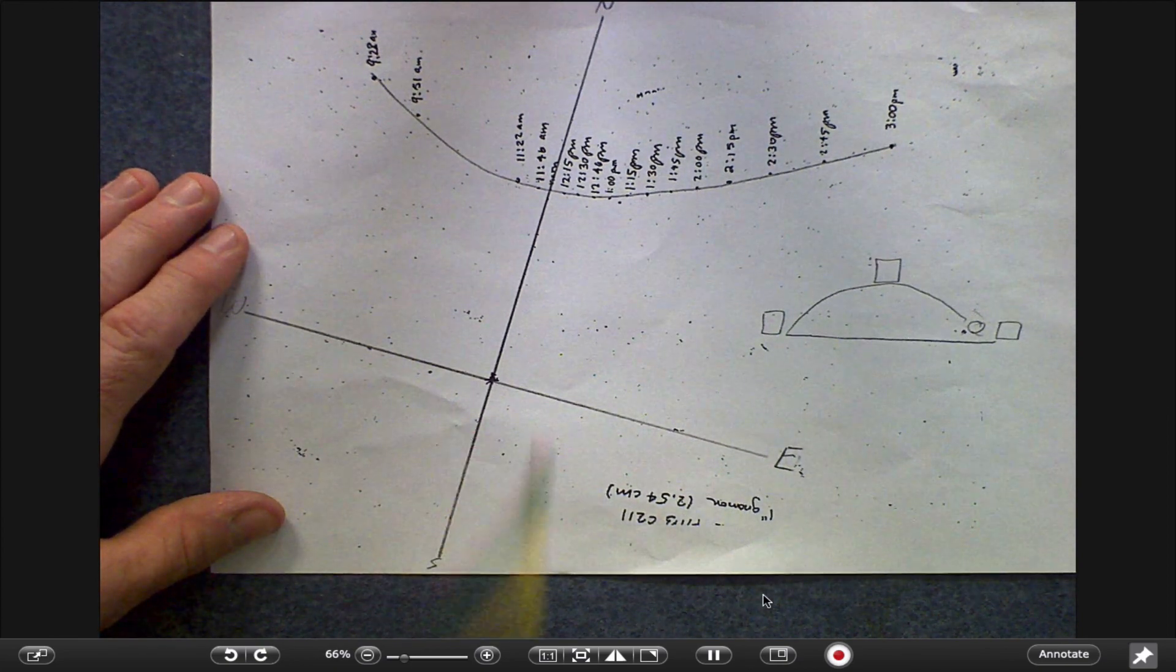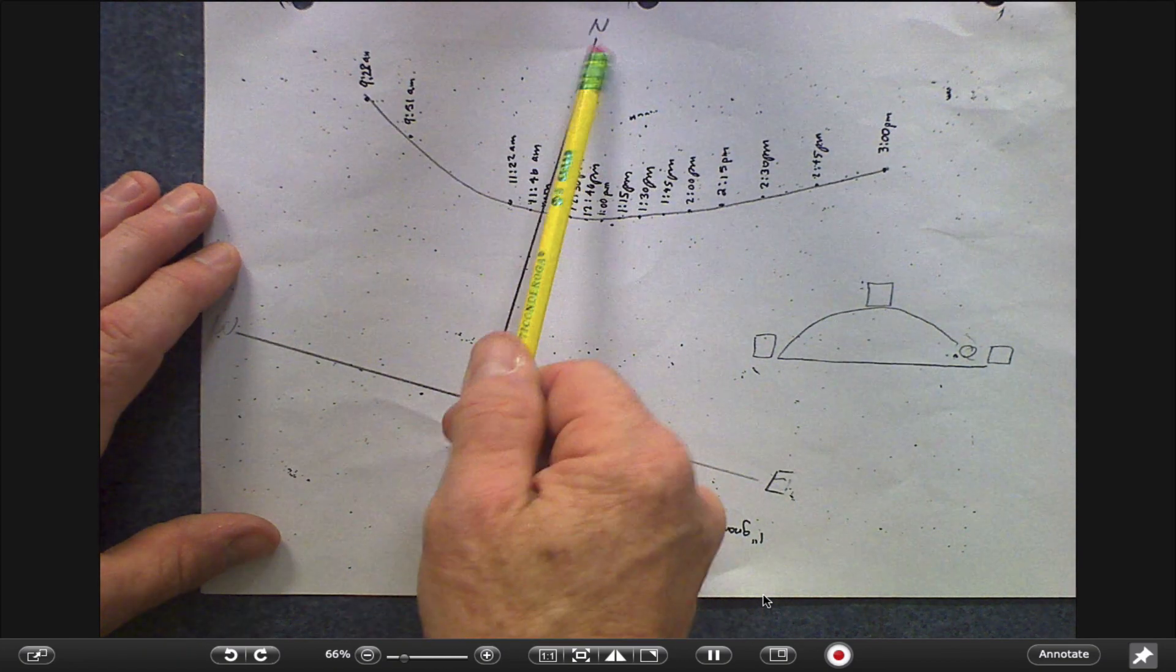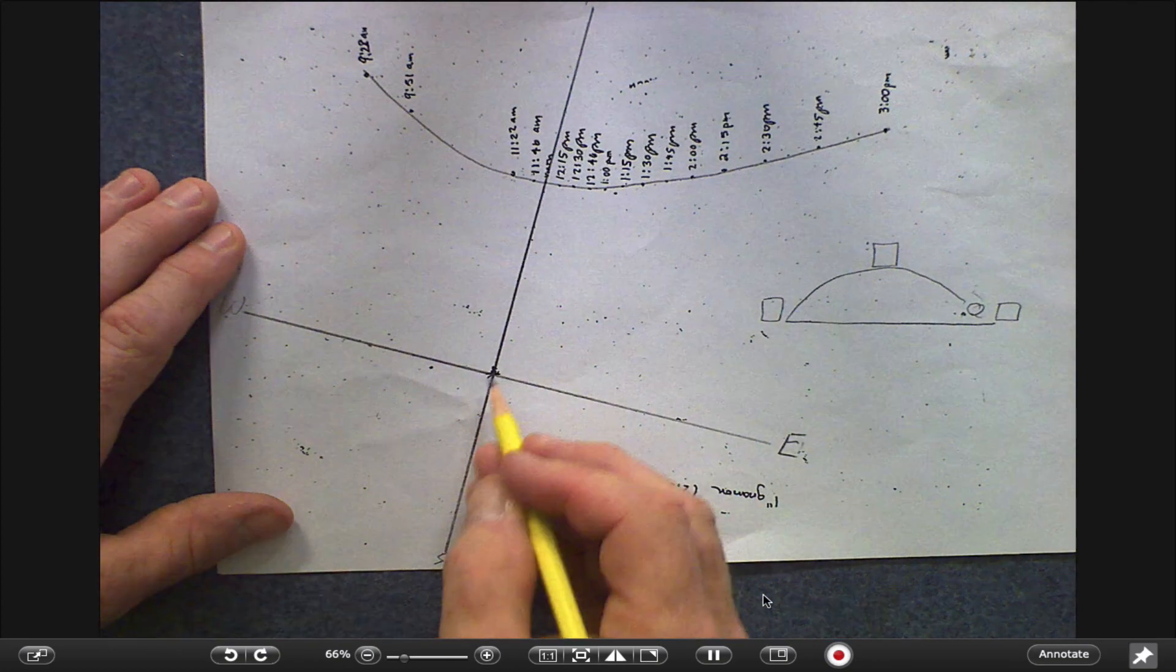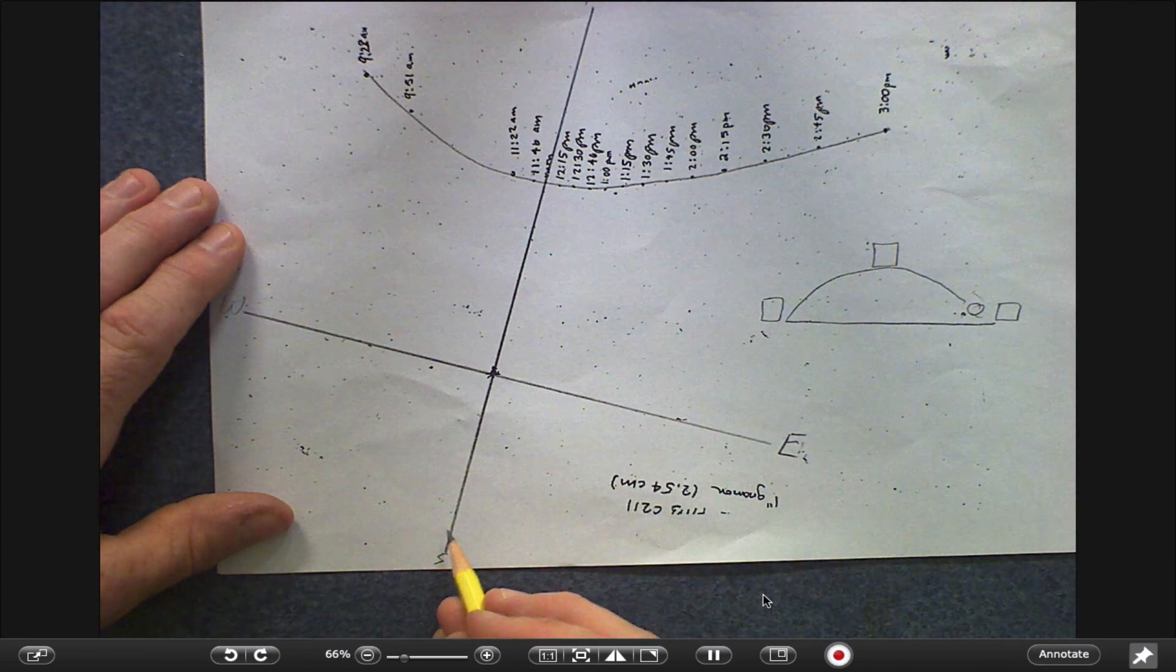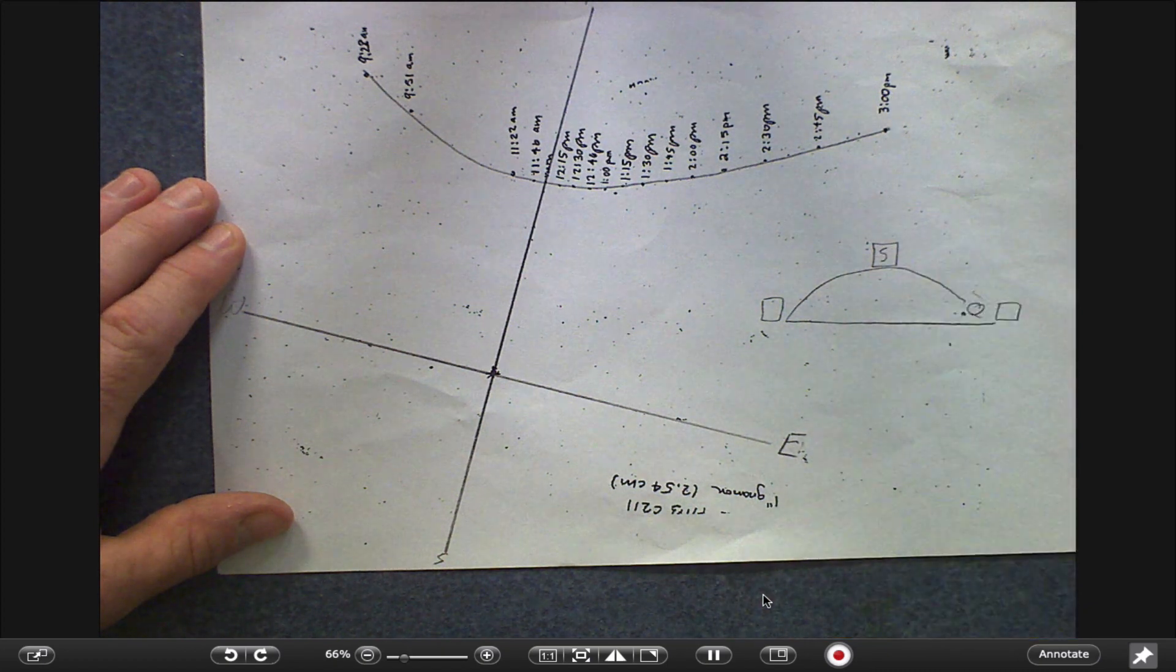On this one, midday is really simple. If this shadow is pointing at north, right at local noon, then the sun has got to be directly opposite that, again like the drawing I showed, which means the sun is directly south.